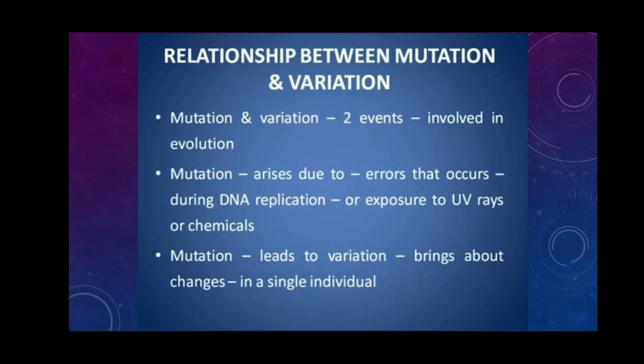So we have learned about variation. Variation means differences among individuals of the same species and offsprings of the same parent. There are two types: somatic variation and germinal variation. Somatic variation occurs on body cells and won't be transmitted. Germinal variation occurs on germ cells — the gametes — and will be inherited. Germinal variation is again divided into continuous and discontinuous variation. Continuous variation is slow and small, occurring by gradual accumulation. Discontinuous variations cause sudden changes and are not useful for evolution.